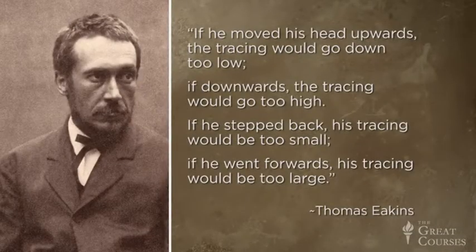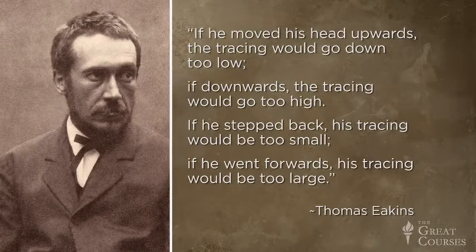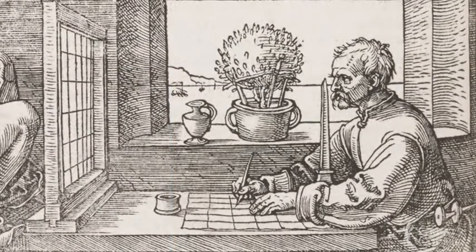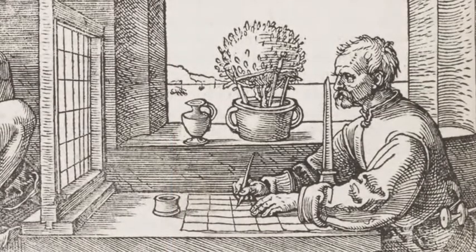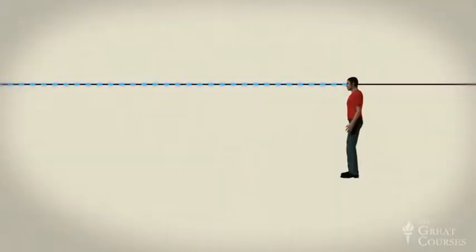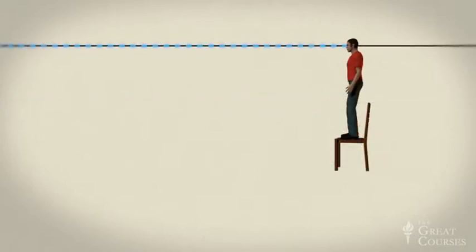Here's Eakins on the negative effects of moving: 'If he moved his head upwards, the tracing would go down too low. If downwards, the tracing would go too high. If he stepped back, his tracing would be too small. If he went forwards, his tracing would be too large.' Returning to Dürer's woodcut, the artist's eye is coincident with the horizon in the landscape — and that coincidence is no coincidence, because the horizon is not a location in nature; it's a function of eye level. Next time you're looking out at a flat landscape or at the ocean, take a pencil and place it horizontally level in line with your eyes: the horizon is coincident with your pencil. This is a notion we'll come back to when we study linear perspective, which was being codified by many of these same Renaissance individuals.